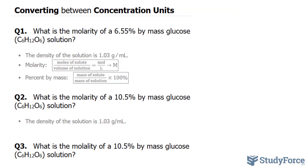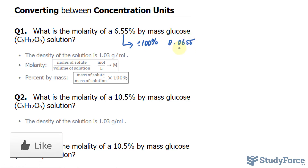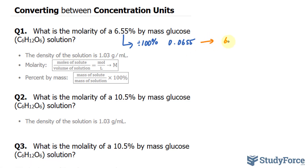So within this solution of unknown volume, we know that 6.55% of it constitutes glucose by mass. The first thing I want to do is represent this percentage as a comparison of the mass of glucose per the mass of the solution. So this number, represented as a decimal dividing it by 100%, is equal to 0.0655. And to represent this as a fraction, we can write down 6.55 over 100.